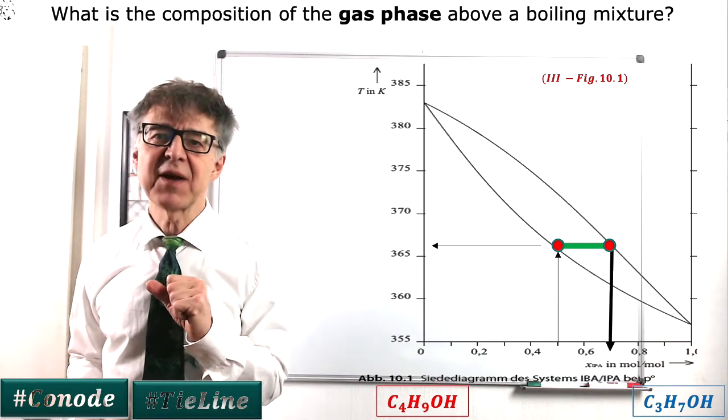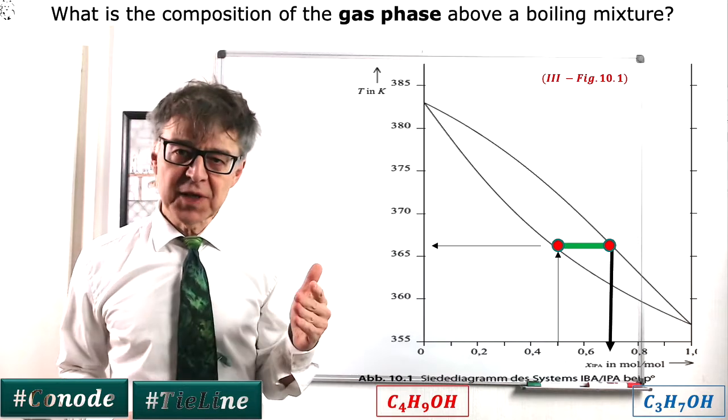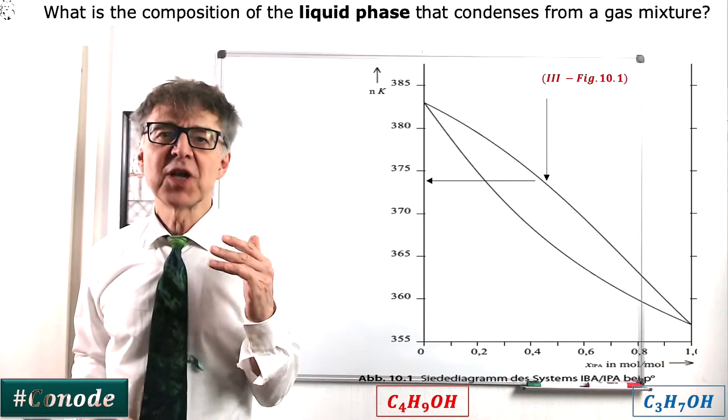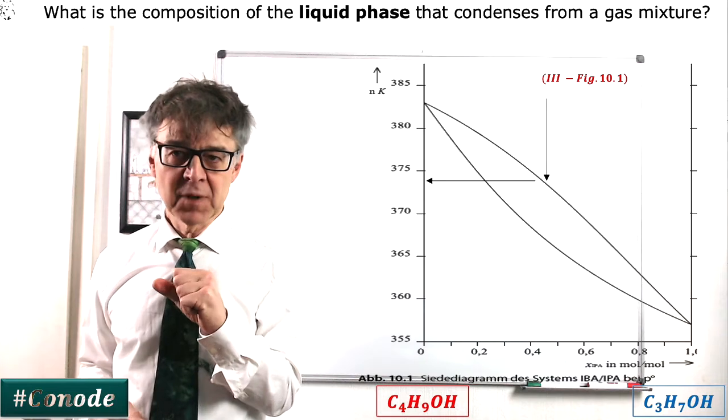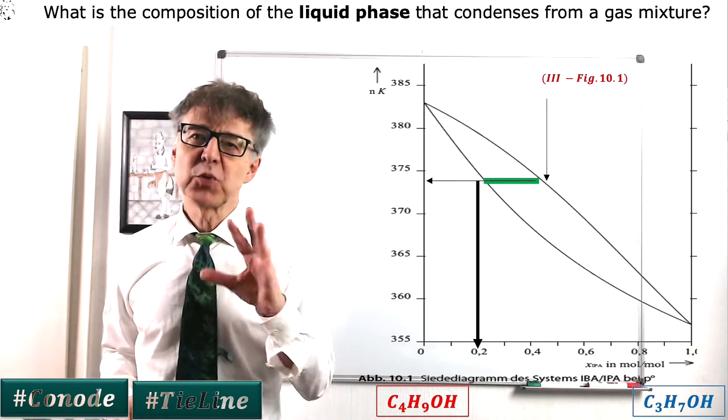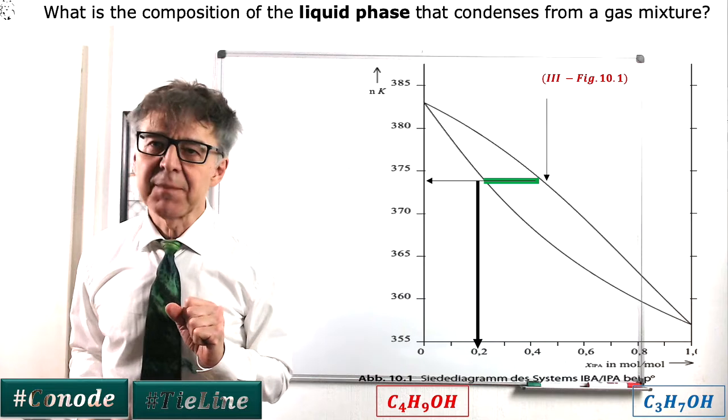The gas phase over a 50-50 liquid mixture is therefore enriched with low boiler. Similarly, we can use a phase diagram to determine that the liquid that results from a 50-50 gas phase mixture is enriched with a high boiler. The tie line tells us that the first drops of liquid are about 20% in IPA.